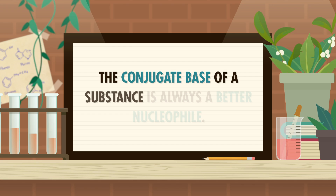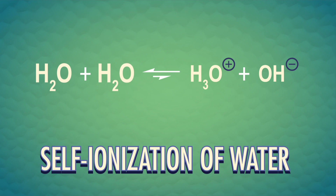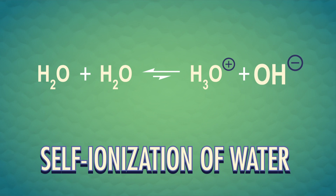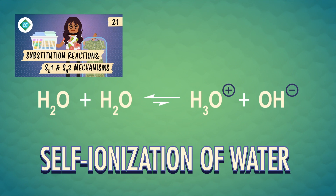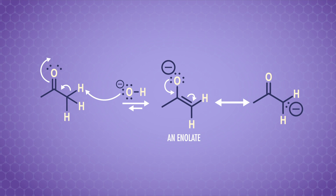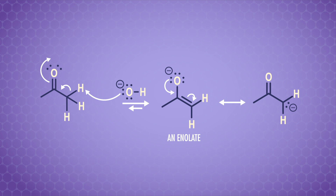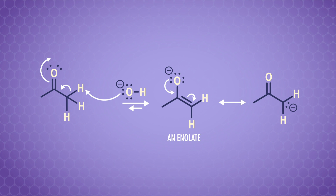But we can make an even better nucleophile from something closely related to enols. Here's a useful organic chemistry rule of thumb: the conjugate base of a substance is always a better nucleophile. Just look at water, for example — water is a nucleophile, but its conjugate base, hydroxide, is a much better nucleophile. The conjugate base of an enol is called an enolate ion, and it has a resonance-stabilized negative charge. Enolate ions, which we often call enolates for short, are great nucleophiles.